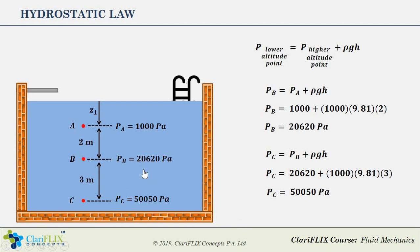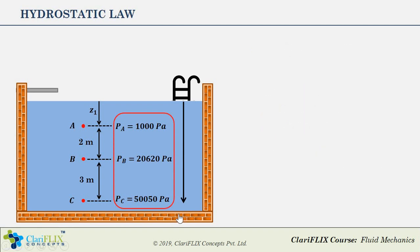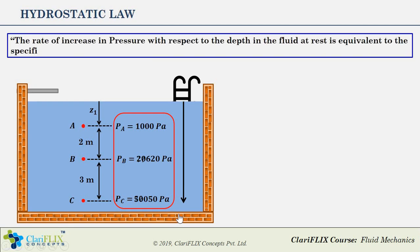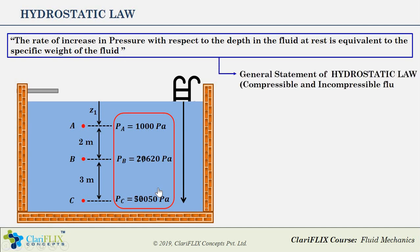If you look at these values, it clearly says that at higher and higher depth the pressure increases linearly, and the rate of increase in pressure with respect to depth is equivalent to the specific weight of the fluid. This is the general statement of hydrostatic law. Mathematically this can be written as dP/dz equals ρg, where dP/dz represents the rate of increase in pressure with respect to depth z, and ρg represents the specific weight of the fluid. This is the more general form of hydrostatic law.